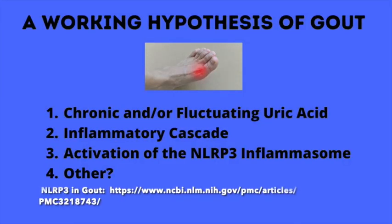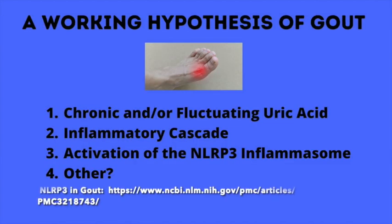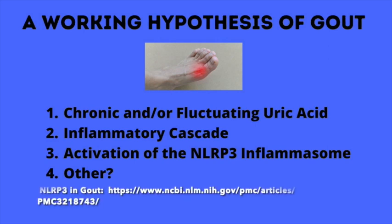First, there are three things that you need in order to have a gout flare. Number one, you have to have circulating uric acid — it doesn't necessarily have to be high, but you need the presence of it. Secondly, you need an inflammatory cascade, a systemic environment that is inflamed. And the third thing is we need the activation of the NLRP3 inflammasome.